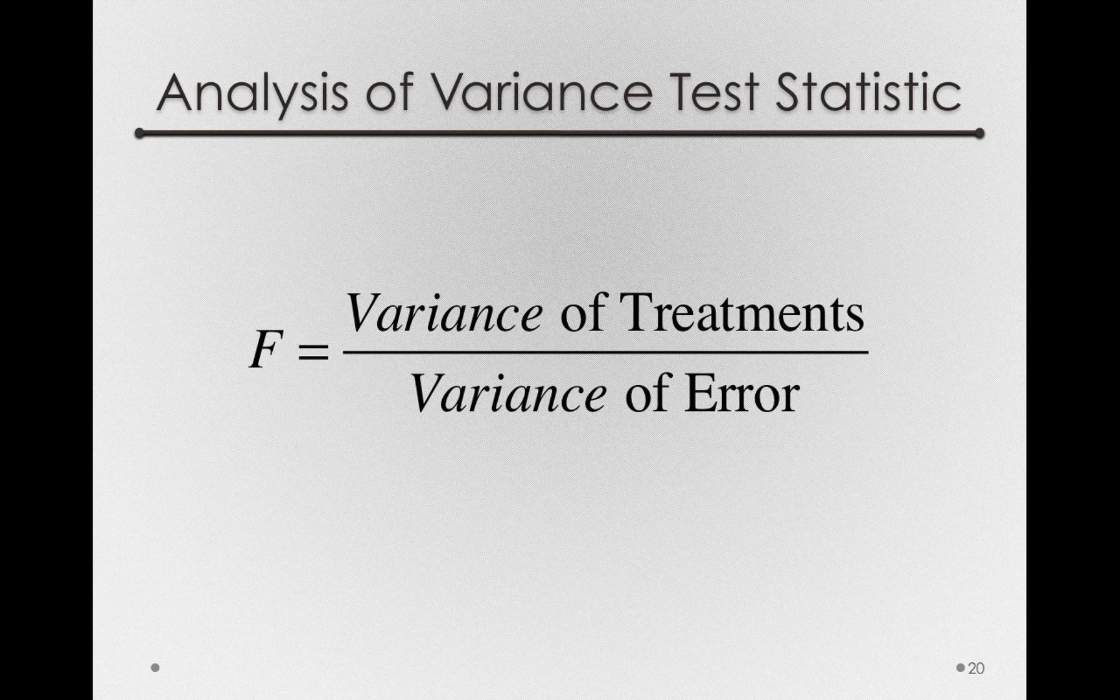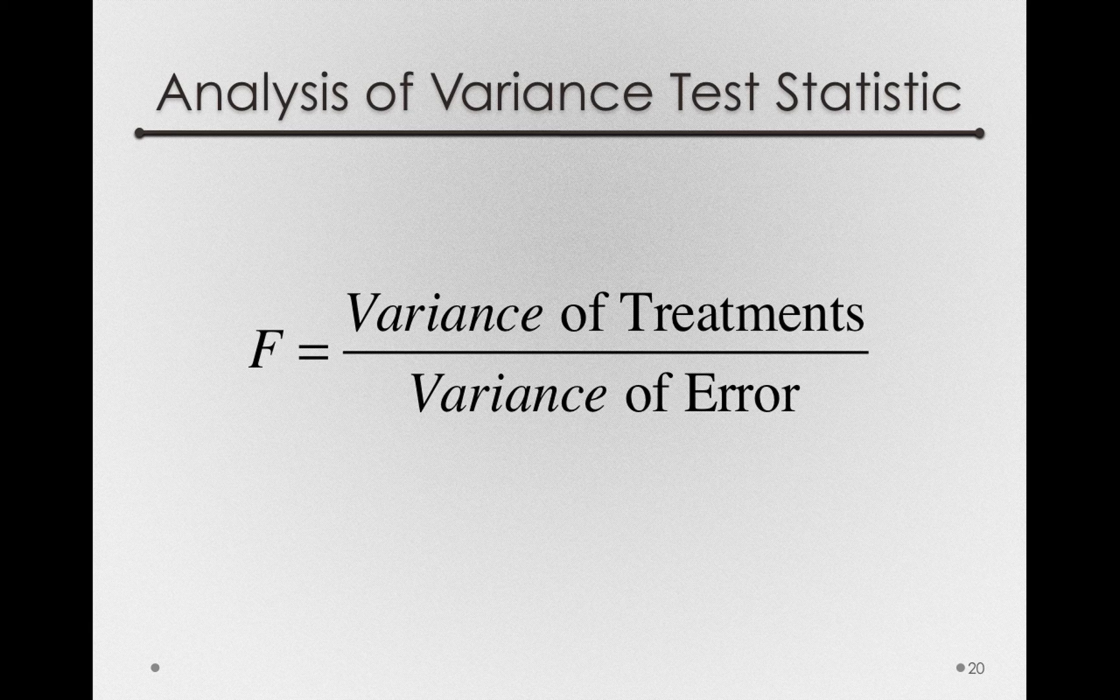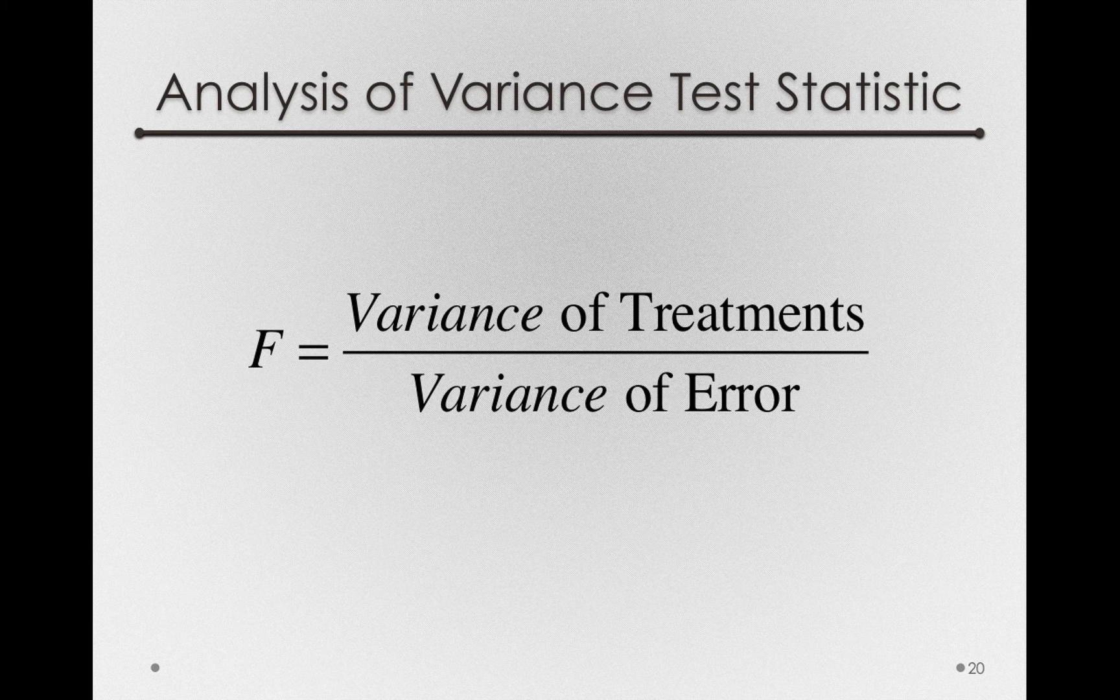That is, we form an F statistic of the variance of our treatments, the variance of the t's, divided by our variance of errors.